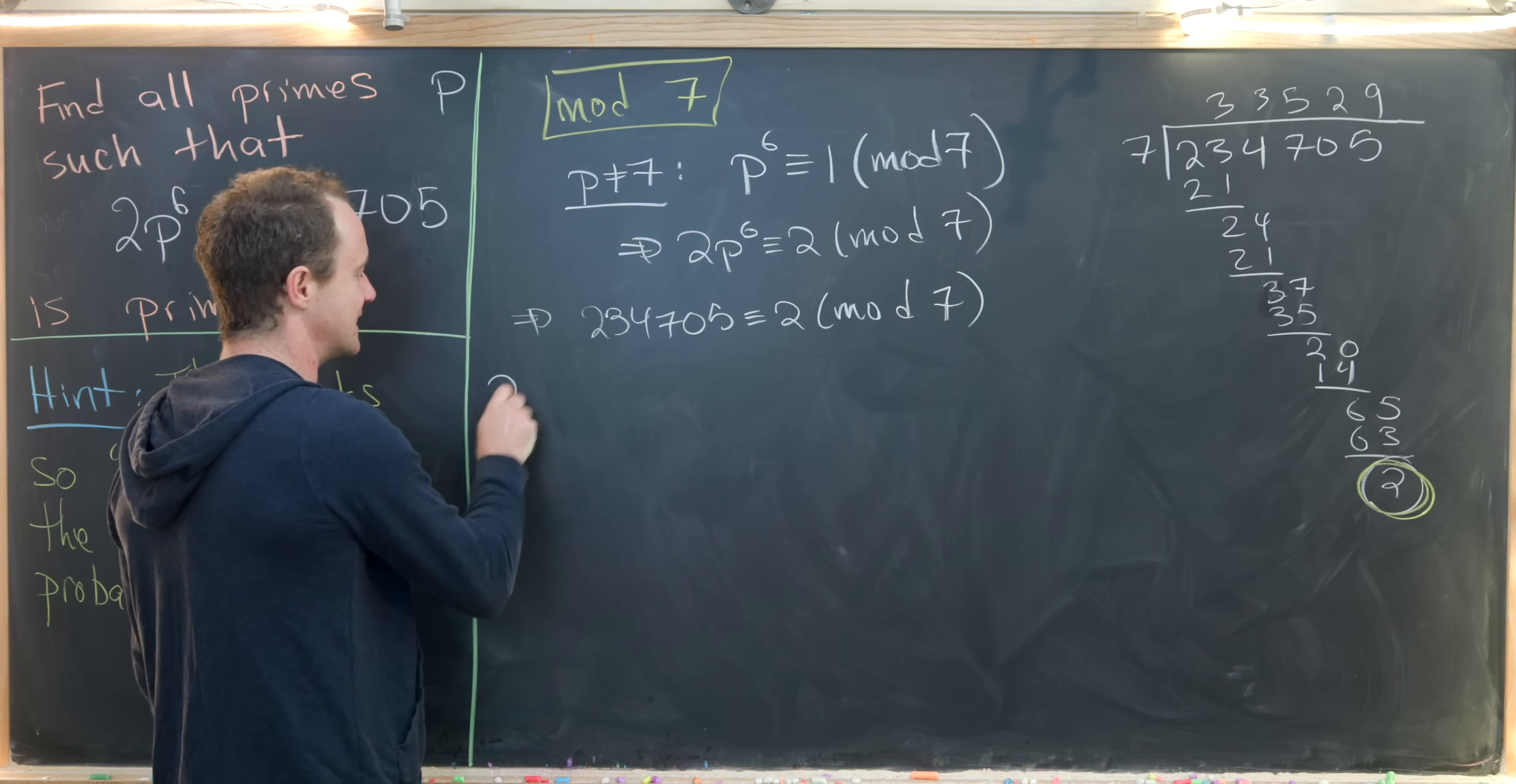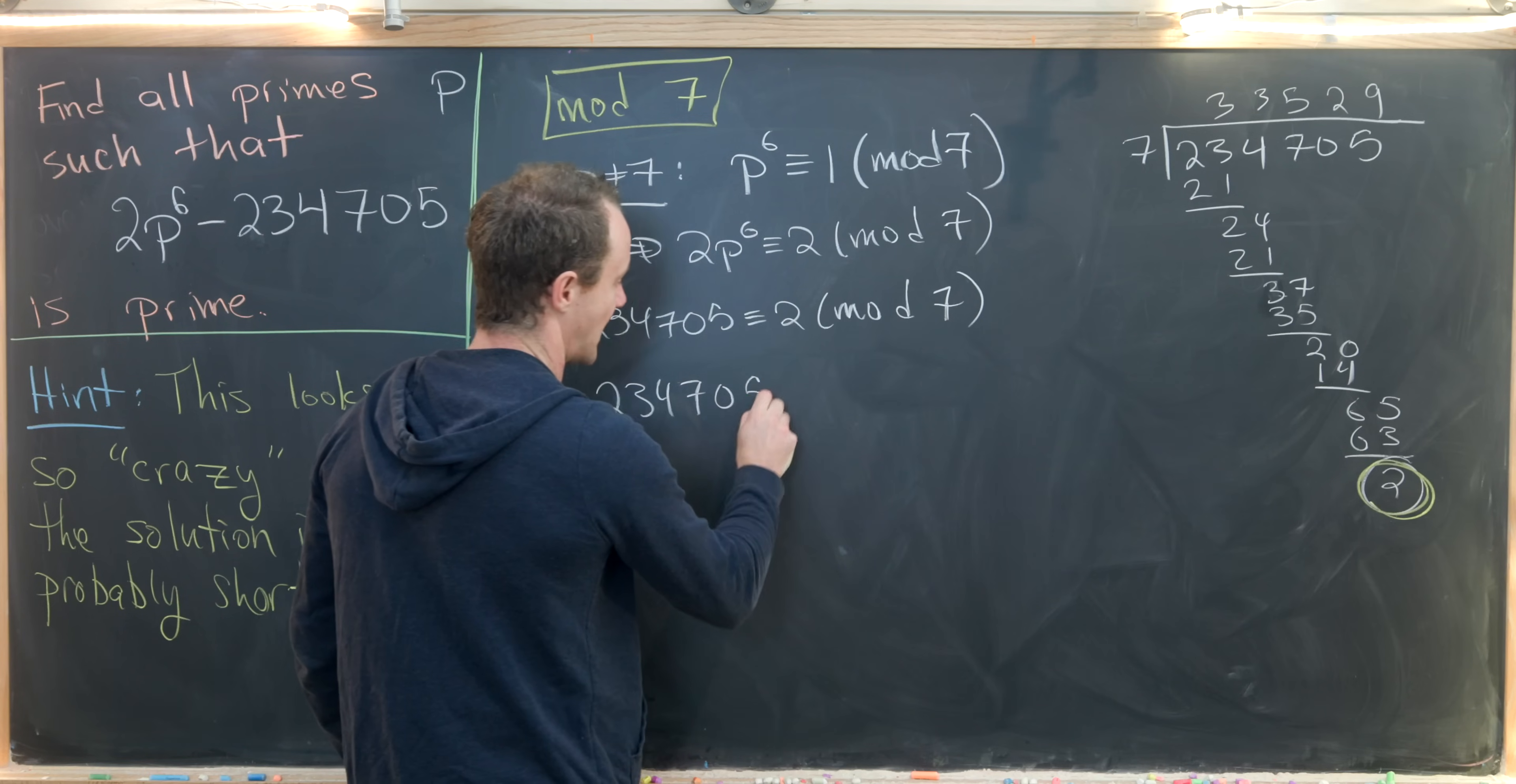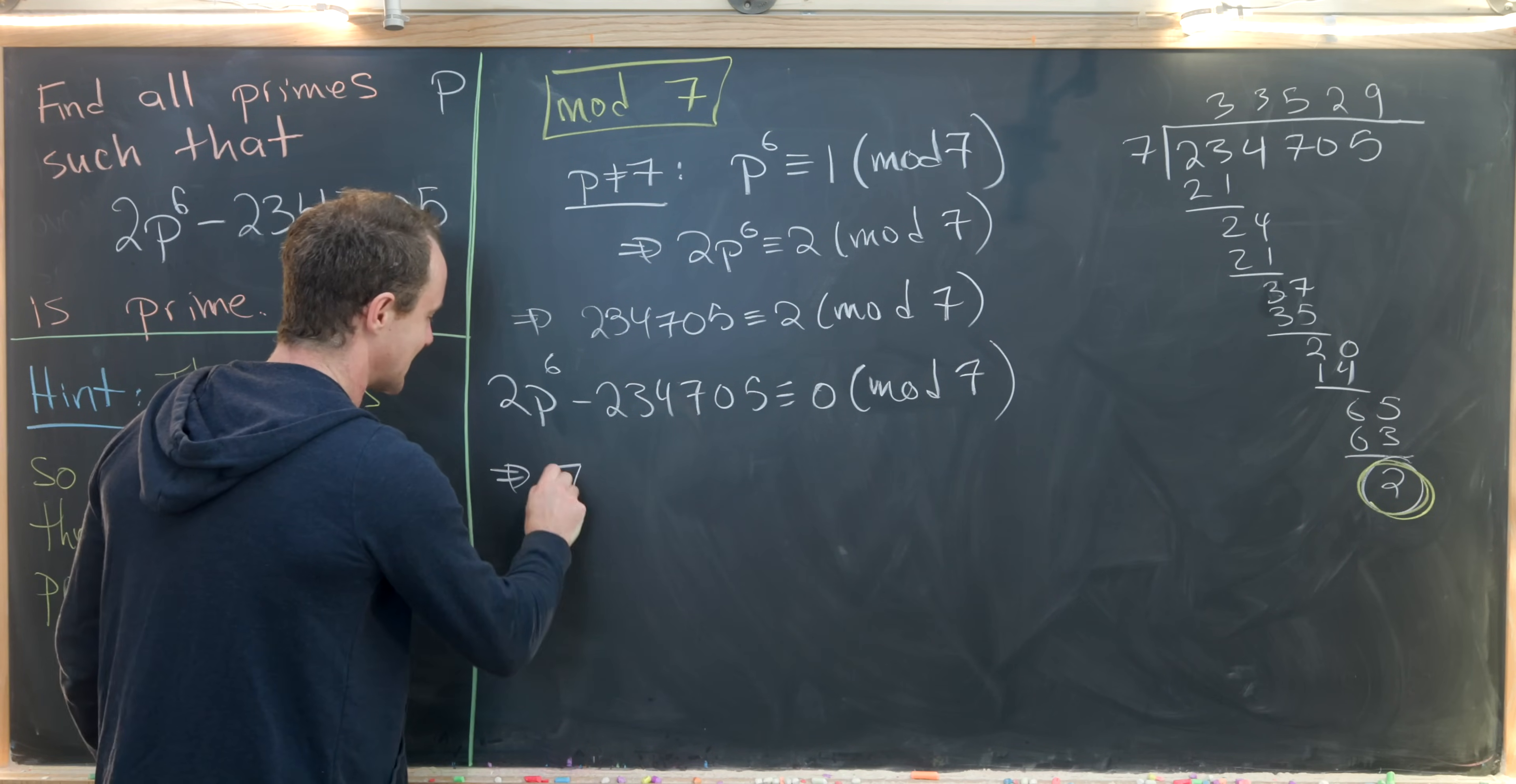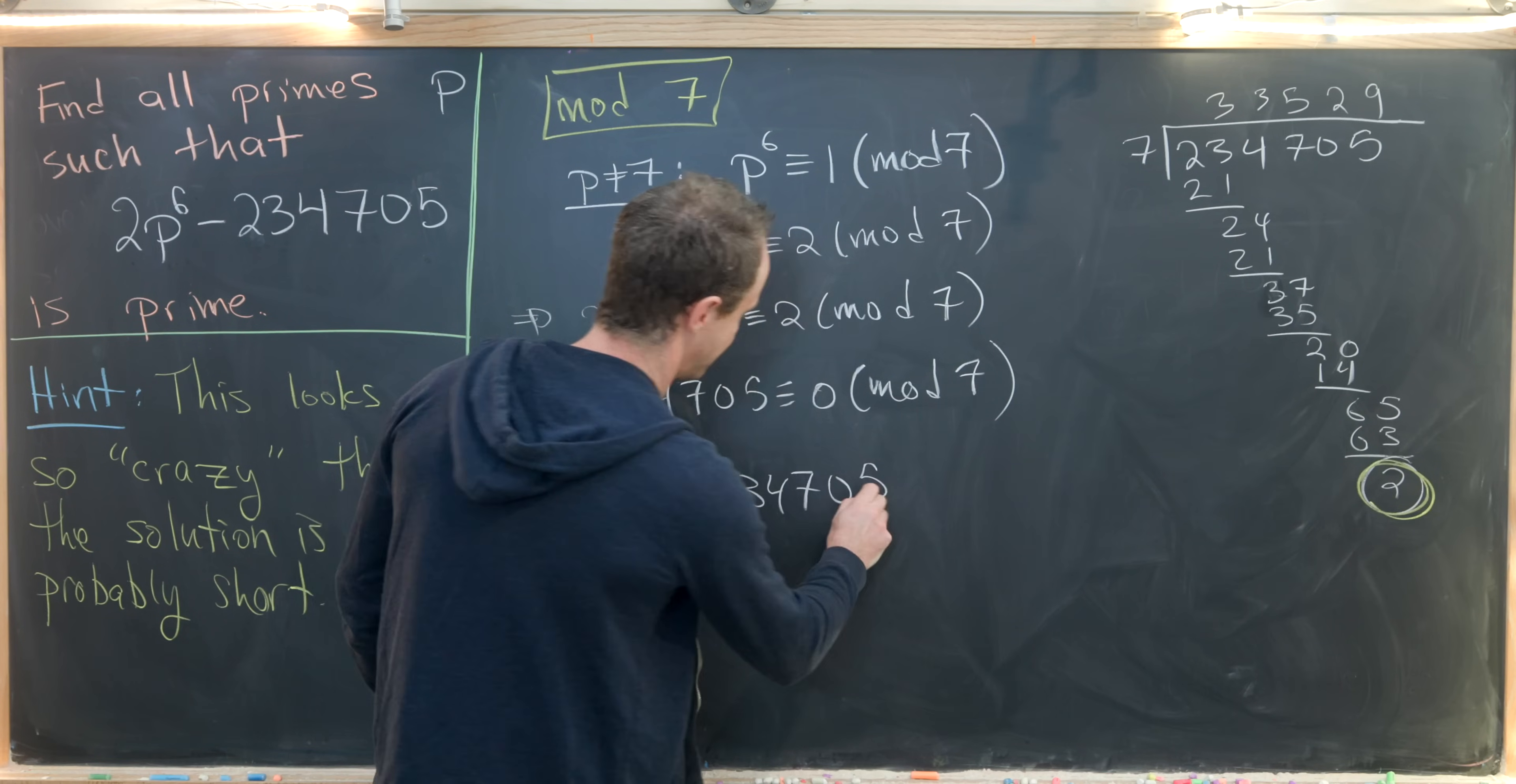So that means if you take the difference of these, so 2p to the 6 minus 234,705, we get something which is congruent to 0 mod 7. But that's problematic because that means that 7 divides this number. So 2p to the 6 minus 234,705.